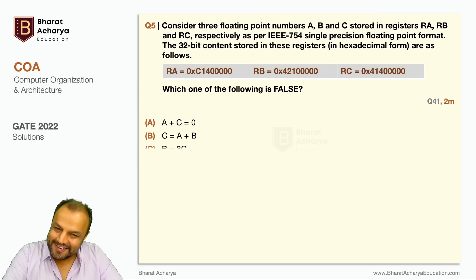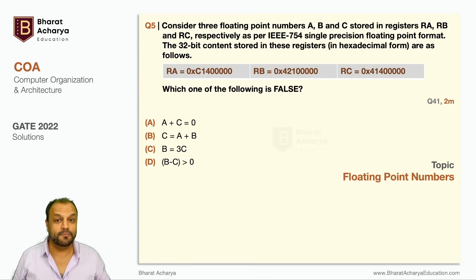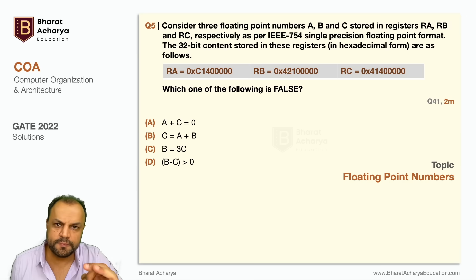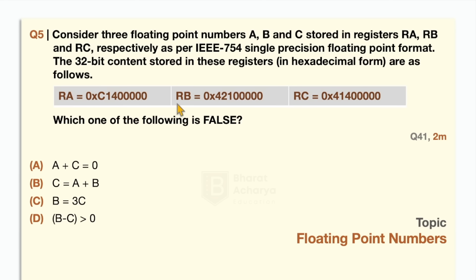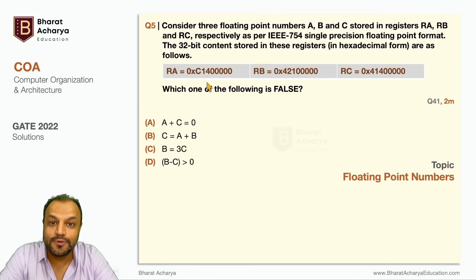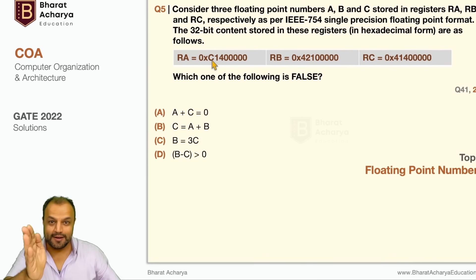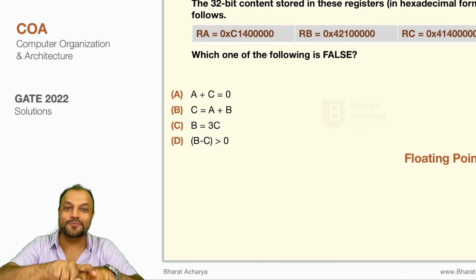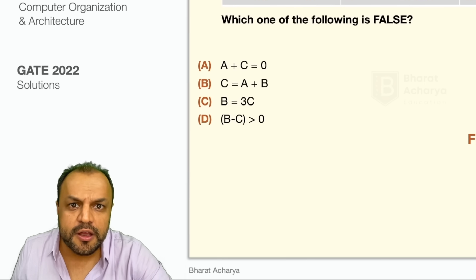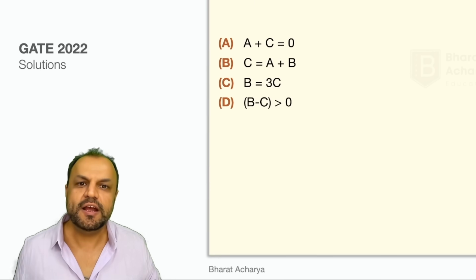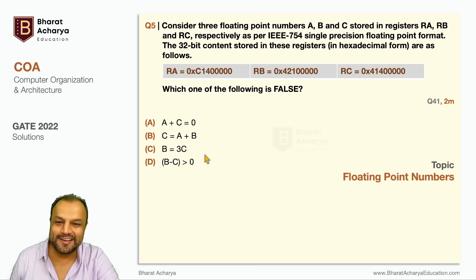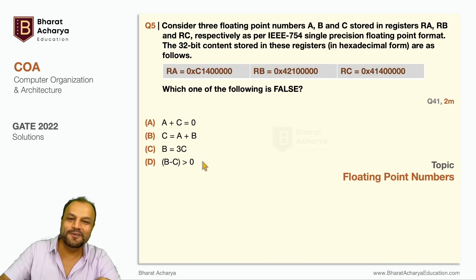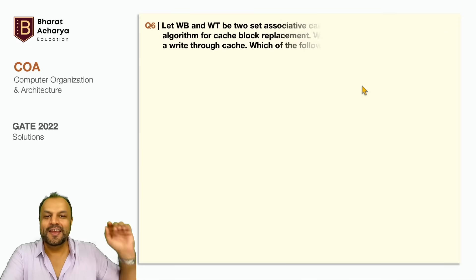The next one is one of our favorite topics — floating point numbers. We've done three full lectures on this, and it's hard to find a paper without at least one question from this topic. Floating point numbers have sign, exponent, and mantissa. Here they've given you three numbers in hexadecimal form. First, expand each number in binary, identify the sign, the biased exponent, and the mantissa, figure out the true exponent, substitute it in the format, and get the number. There are tricks to do this quickly for all three numbers. Once you know them — say minus 12, 12, and 36 — you can immediately tell which statements are true and which are false.